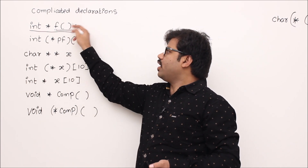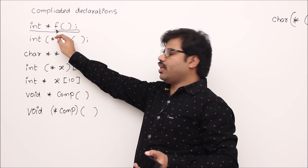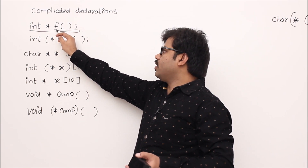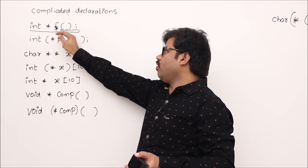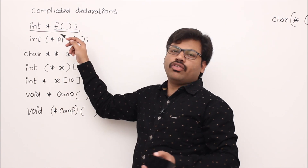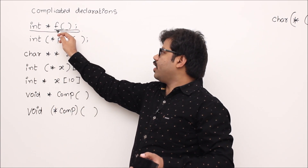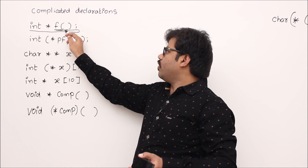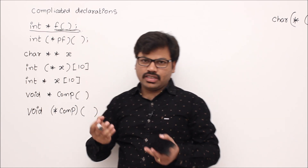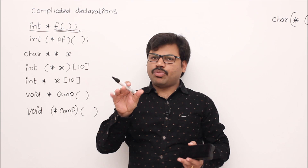While traveling that path, whenever you see a notation, read it. For example, 'f is a variable' — that's why you say 'f is a variable.' In the entire declaration, there will be only one variable. So 'f is a variable which is a function.' Generally, a function will have some arguments.